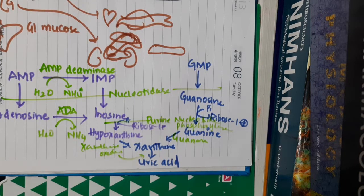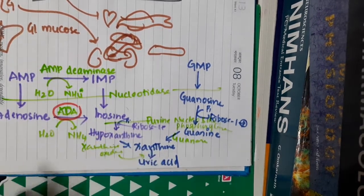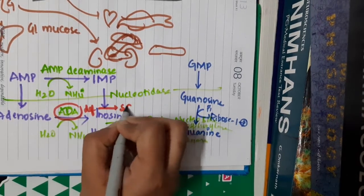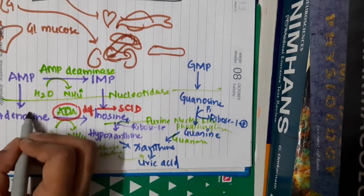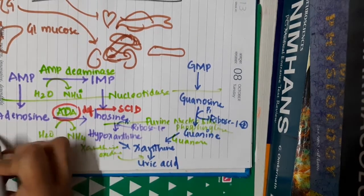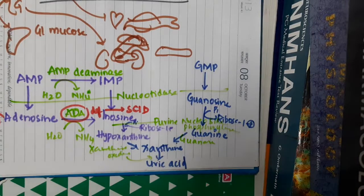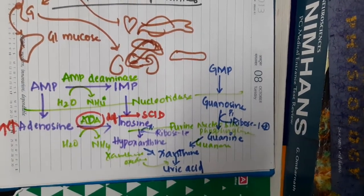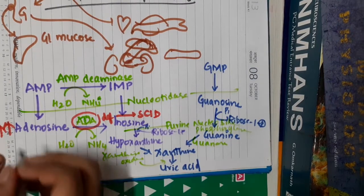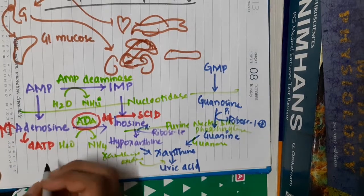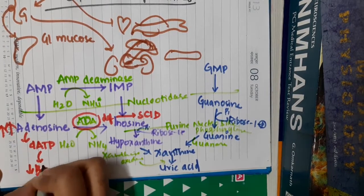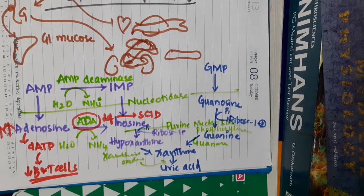Regarding enzyme deficiencies: adenosine deaminase (ADA) deficiency results in severe combined immunodeficiency syndrome (SCID). When ADA is deficient, adenosine cannot be converted to inosine and accumulates. This accumulated adenosine is converted to dATP, which decreases the synthesis of B and T cells, causing immunodeficiency.